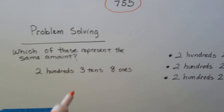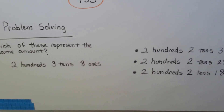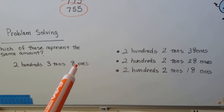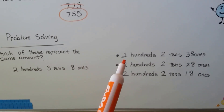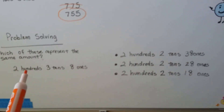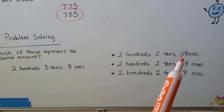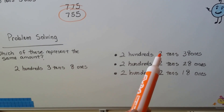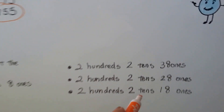Let's try some problem solving — which of these represent the same amount as two hundreds, three tens, and eight ones? That's 238. One choice has two hundreds, two tens, and thirty-eight ones. If we move those extra tens to the tens place, two tens plus three tens makes five tens — but we're only supposed to have three tens, so that's not right.